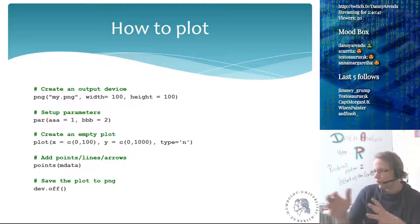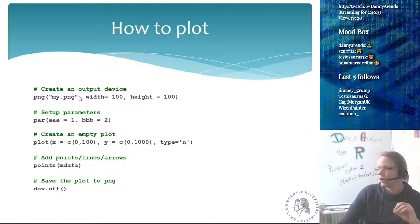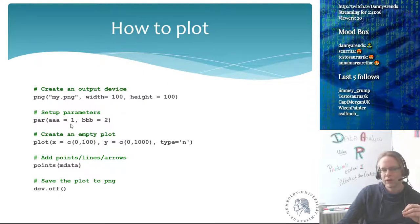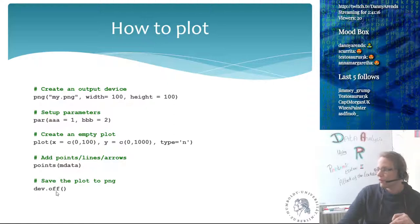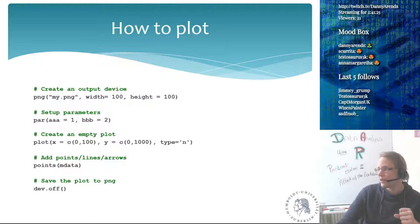After I'm done, I call dev.off(), which saves the PNG. It executes all the commands and saves the file to disk. PNG is similar to opening a file connection — when you open a connection you must close it at the end. Similarly for plots: you open a connection, stream the plot parameters into it, and when you call dev.off() it closes the file and creates the image. If you forget dev.off(), you'll have a file that's zero bytes.